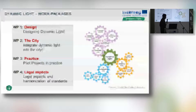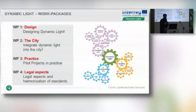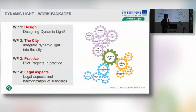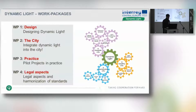As Professor Oumhild had talked about in his presentation in the morning, the dynamic light research project is made up of four different work packages or components, and each deals with various different aspects of public lighting — for example, design, master planning, GIS, pilot actions, and legal aspects.